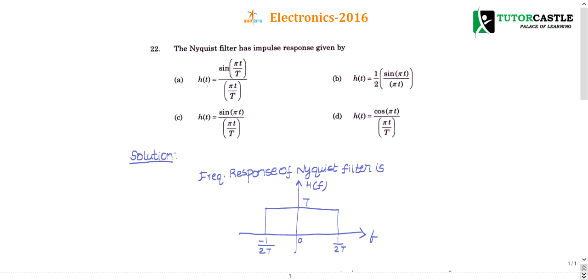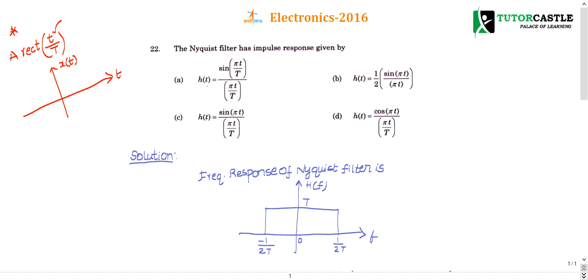Before going to the Nyquist filter frequency response, I want to brush up one concept regarding the rectangular pulse. If anybody says rect(T / T_capital), what does it mean? It is a graph plotted with the x-axis as the time axis — note that T means the x-axis should be the time axis — and the y-axis is the time domain signal, anything like g(t), x(t), or h(t). Capital T indicates the duration of the pulse.